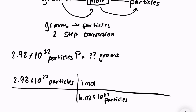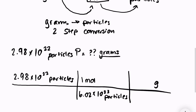I'm not done yet — if I stopped here I'd know the moles, but I want grams. So grams should be on top of the next unit conversion, and one mole goes on the bottom. The conversion factor is one mole equals the molar mass of phosphorus, which is 30.97 grams from the periodic table. In your calculator, type 2.98 times 10 to the 22nd, divided by 6.02 times 10 to the 23rd, then multiply by 30.97, since we multiply everything on top and divide by whatever's on the bottom.